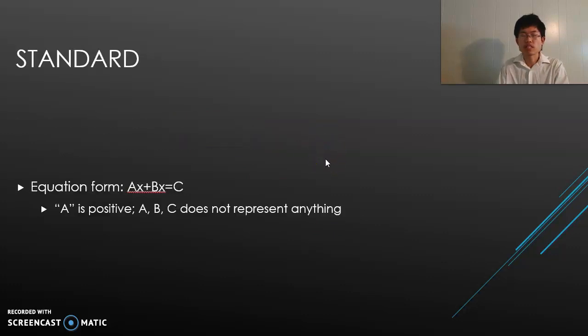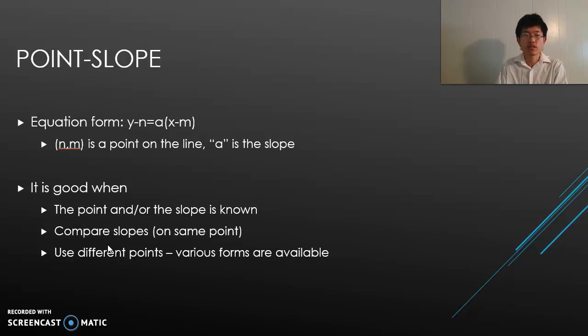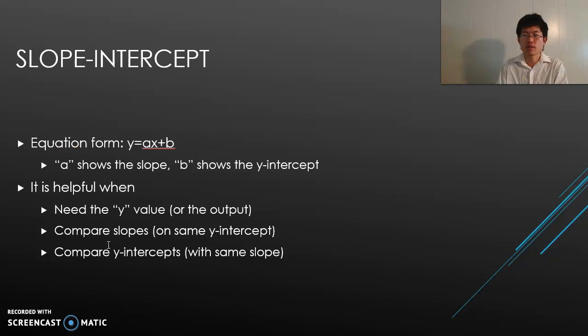Next one is the standard form. It's in this form: ax + by = c. a has to be positive. The capital A, B, and C don't really have anything to do with the graph—they don't represent anything in the graph.